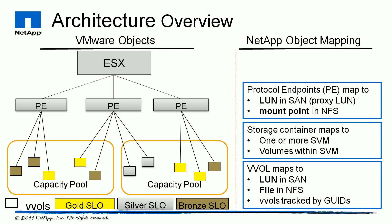With SAN, the protocol endpoint is called the proxy LUN, and this is seen on the SAN fabric, and proxies IOs between the ESX servers and many virtual disks behind the proxy LUN itself. For NFS, the protocol endpoint is simply an NFS mount point.